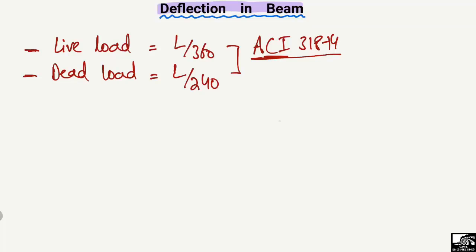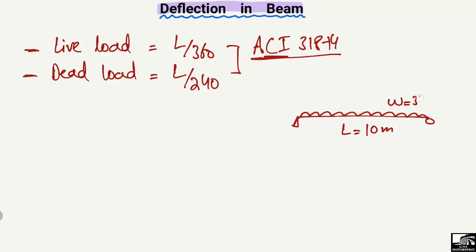Consider an example of a simply supported beam of length 10 meters. There is a live load acting on this beam — let's say W equals 3 kilonewtons per meter. Due to this load acting on the beam, it will show some deflection, with maximum deflection occurring at the center of the beam.